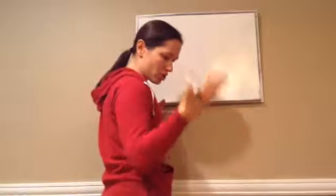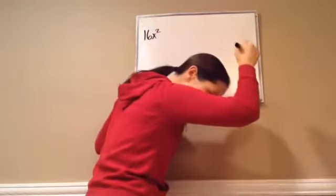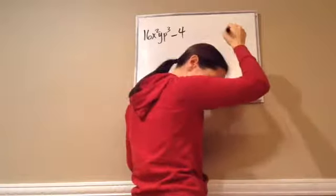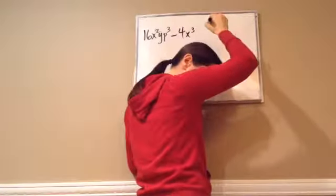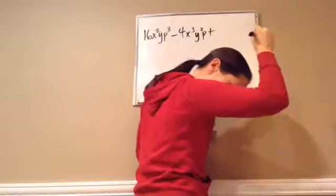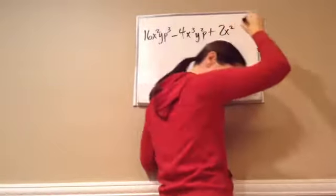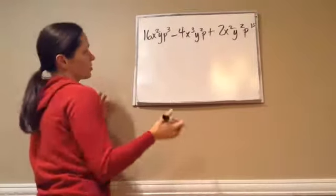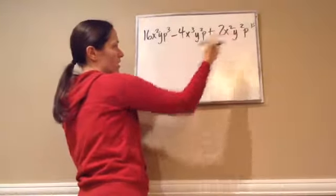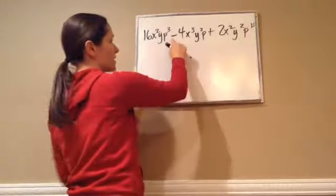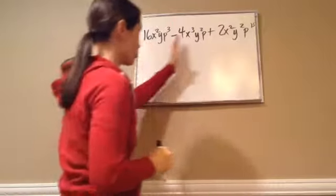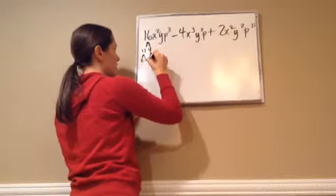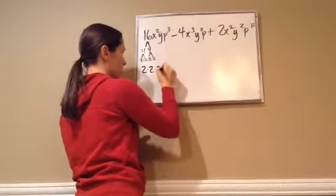Now, the greatest common factor, this just gives us 3 of them. So 16x squared yp to the third power minus 4x cubed y squared p plus 2x squared y squared p to the 15th. Now, they give a pretty large number on that one, but it's okay. You're still going to do the same problem.